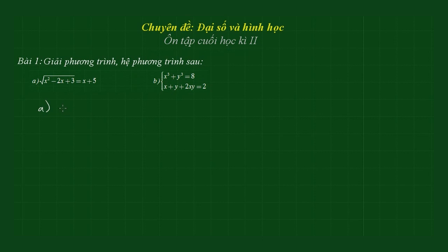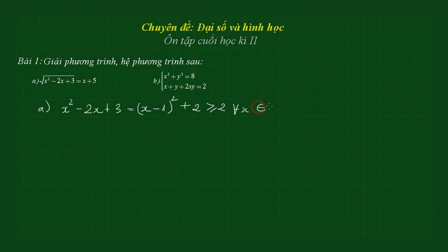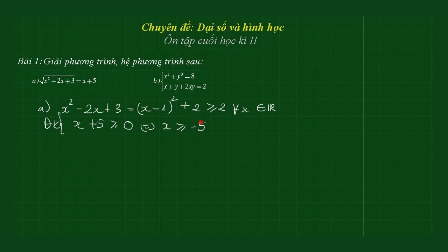Điều kiện của phương trình: x² - 2x + 3 luôn dương với mọi x thuộc R, vì x² - 2x + 3 = (x-1)² + 2 ≥ 2. Vì vậy điều kiện cần đặt là làm cho giá trị vế phải không âm, tức là x + 5 ≥ 0, tương đương với x ≥ -5.